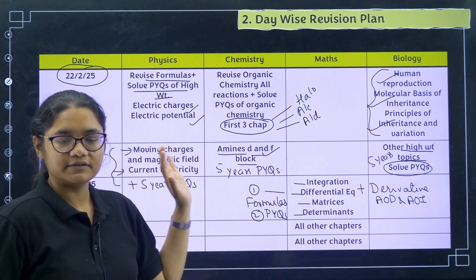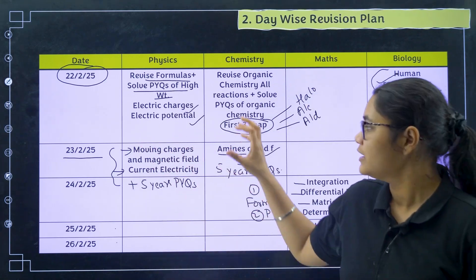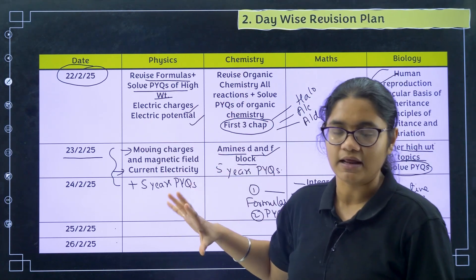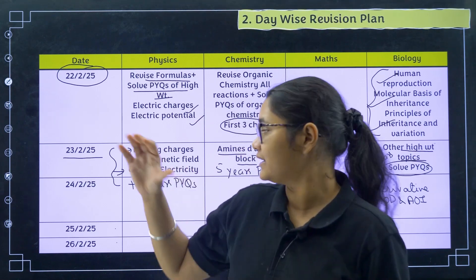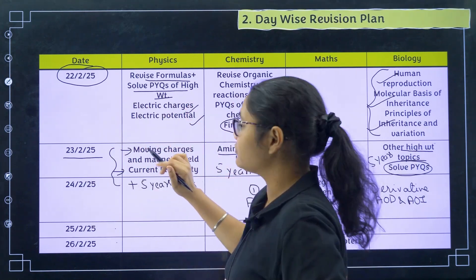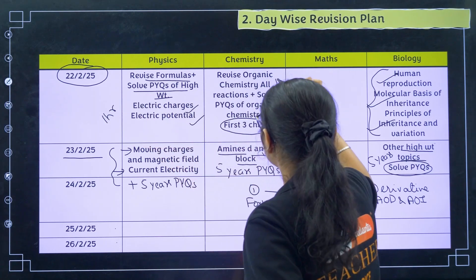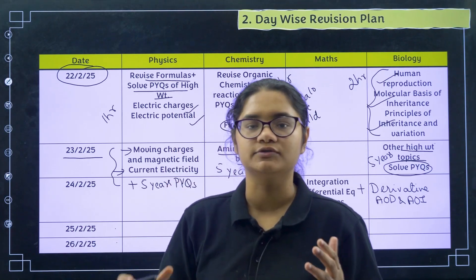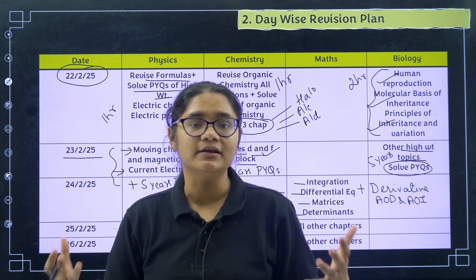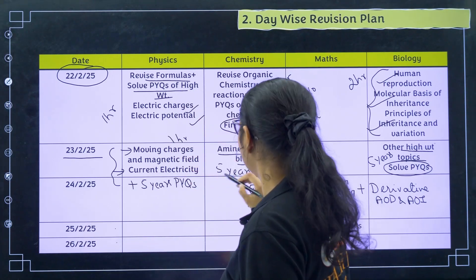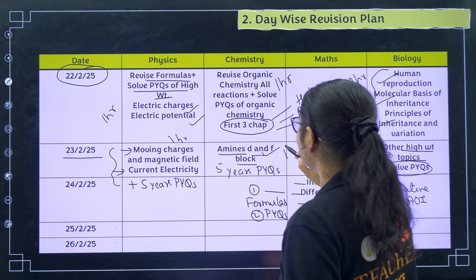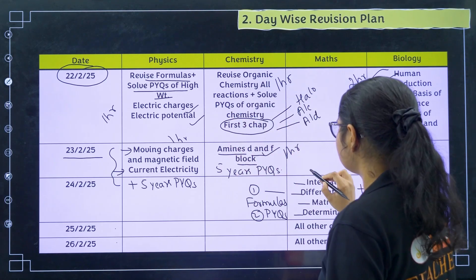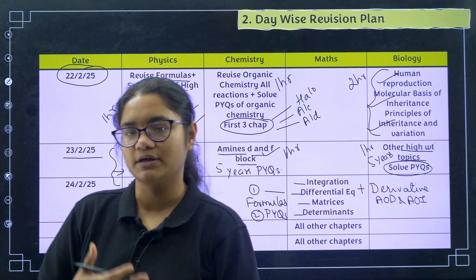I hope this timetable is clear. If you have completed all the syllabus and are just doing revision, you can add more topics. But I assume that 100% of the syllabus is not completed for everyone. For the time allocation: give about 1 hour to physics, 1 hour to chemistry, and 2 hours to biology — so about 4 hours for revision total. The next 6 hours you can use for studying incomplete syllabus, with 1 hour each for those subjects. For mathematics on 24th to 26th, the whole day is for revision and preparation.